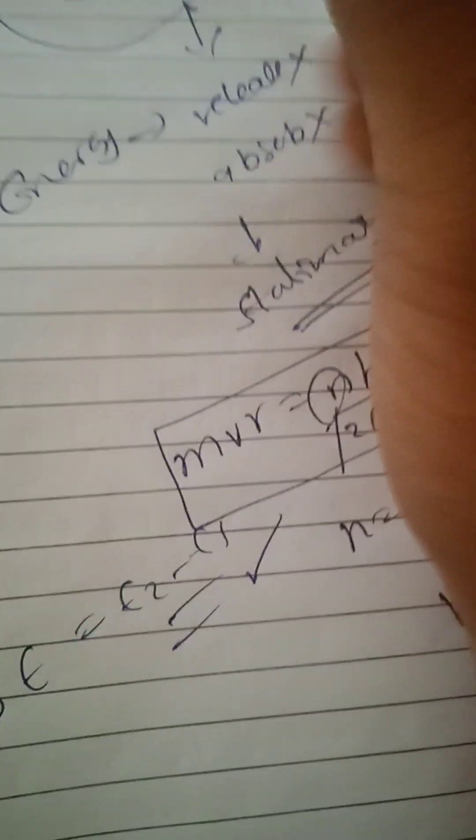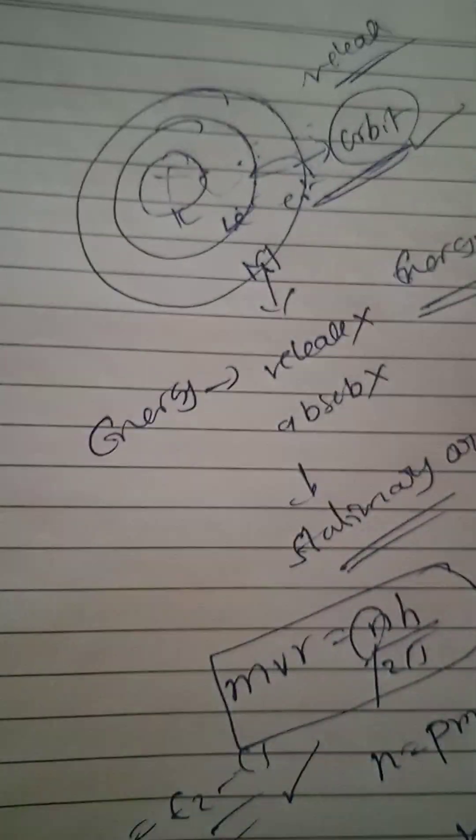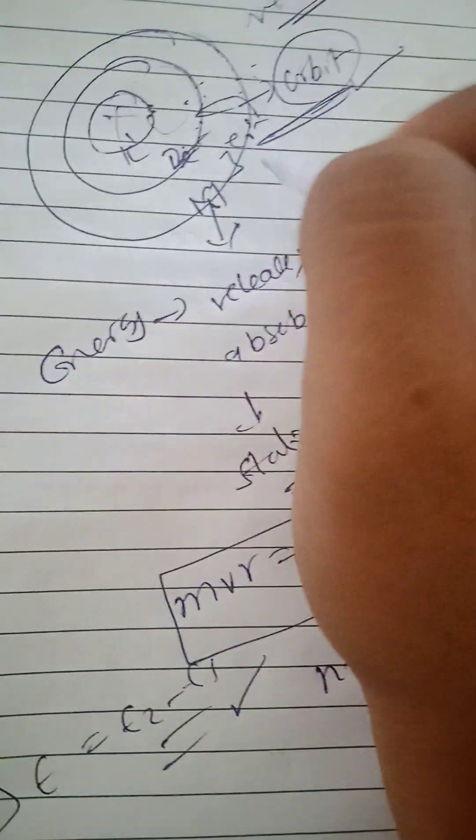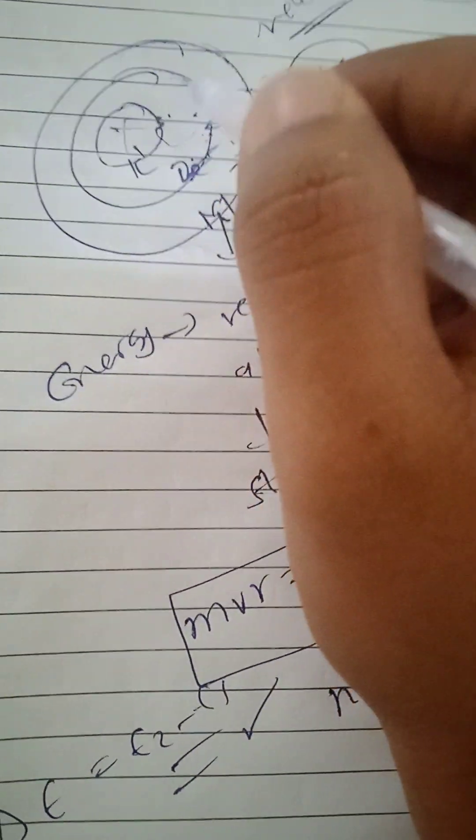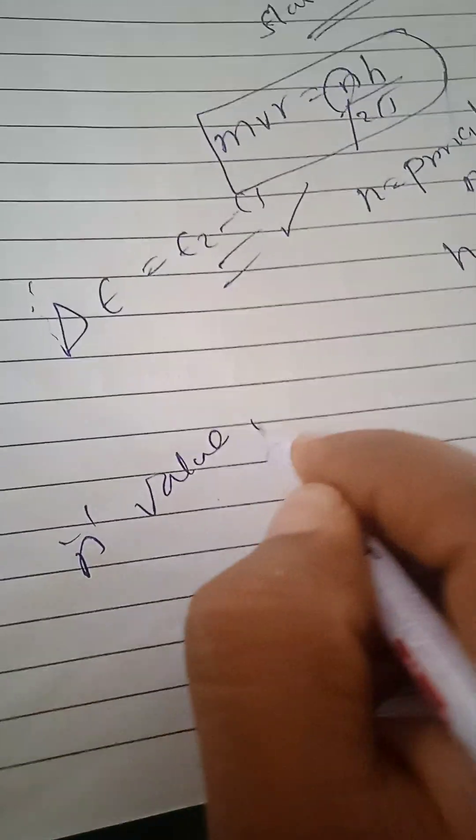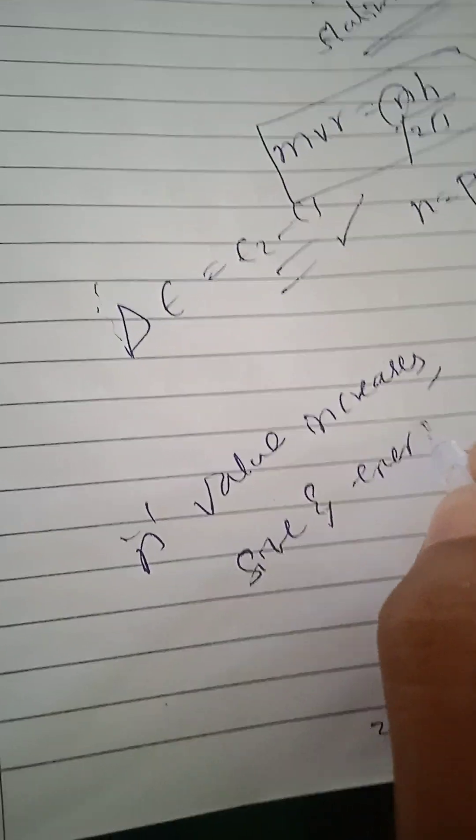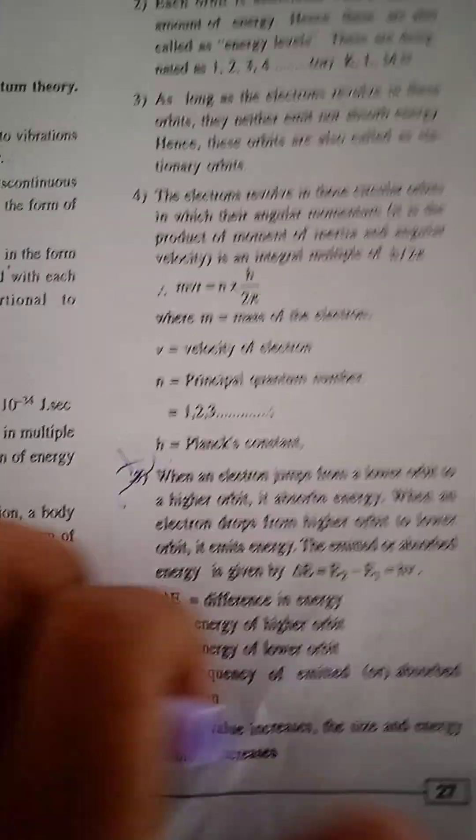As the N value increases, the size and energy of the orbit increases. We have the orbit numbers K, L, M, N. As the N value increases, the size and energy increases.